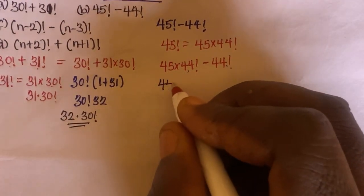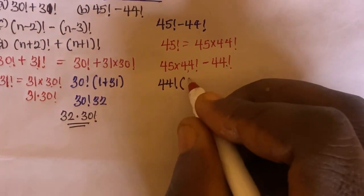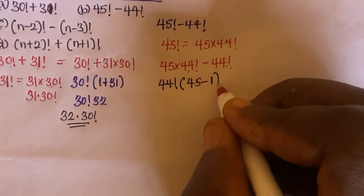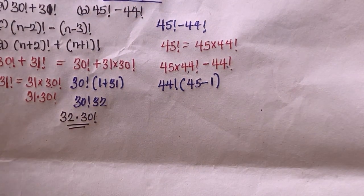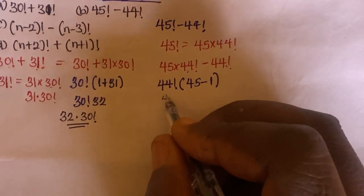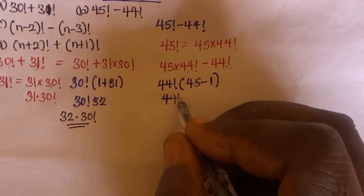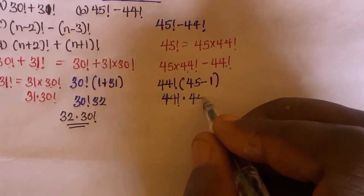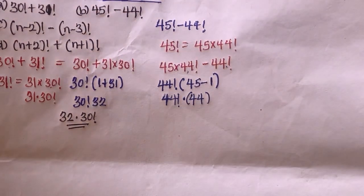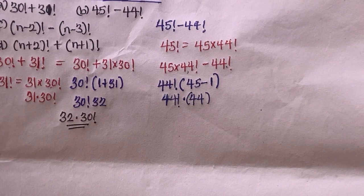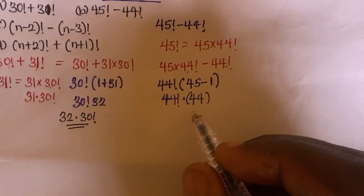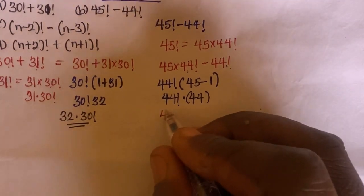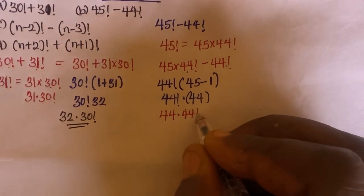Factorizing out 44 factorial, we get 44 factorial times (45 minus 1), which is 44 factorial times 44. But the 44 outside doesn't carry a factorial, so the correct form is 44 times 44 factorial.